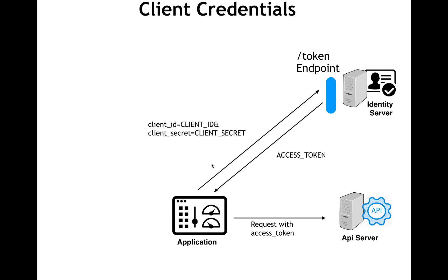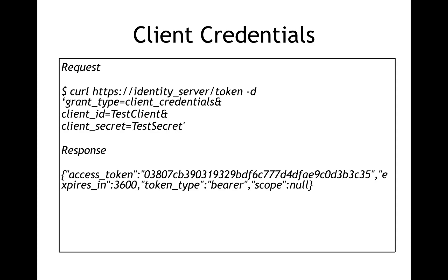If it's running in the background, the choice is client credentials. In the case of client credentials, the application has a secret and it passes that secret to the identity server — ID and secret — and in return you get an access token, which is then used to communicate with the API server. Looking at the request/response pattern, the request has the client ID and secret, and in response you get the access token.